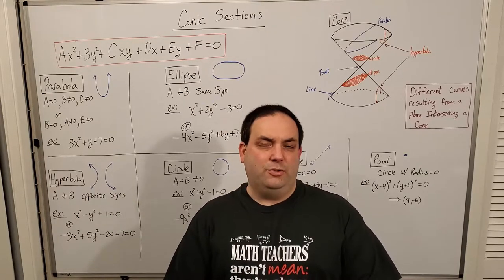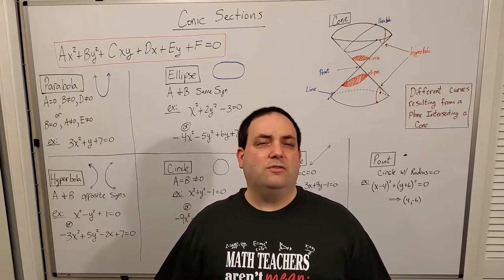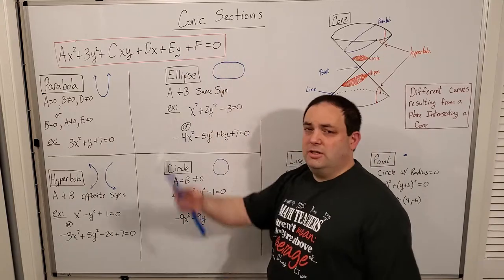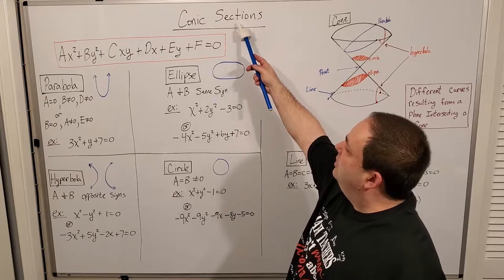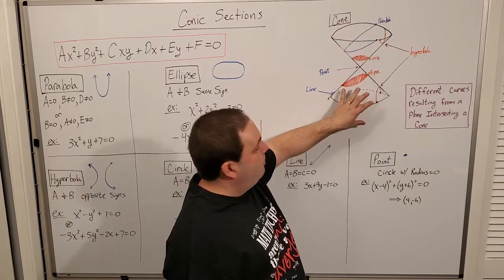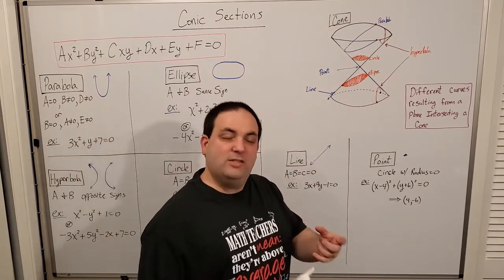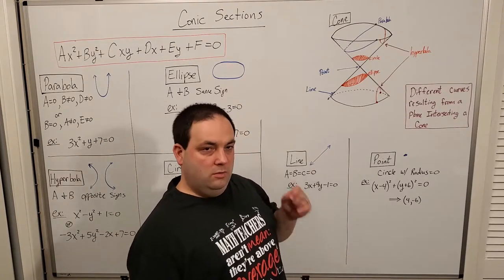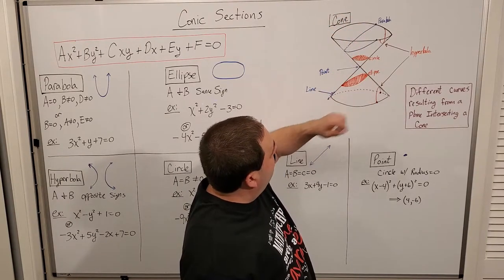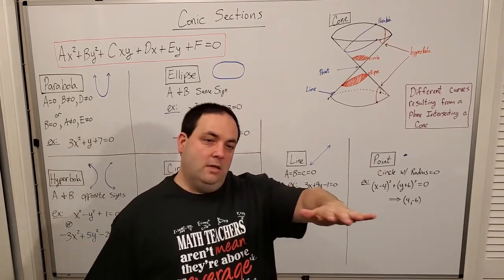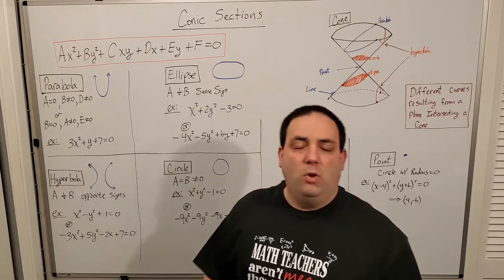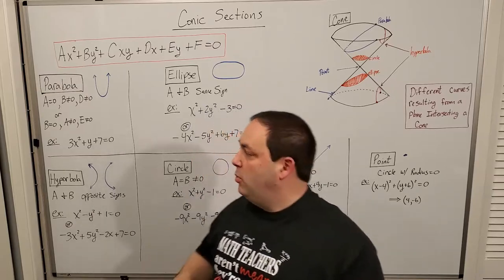The first thing we want to step into is what we call conic sections — very popular, very common curves that come from straightforward equations. A conic section is exactly what the name describes: it's a section of a cone. A cone is both the top and the bottom of this shape — what we call a cylindrical cone. A section is when I take a plane and slice into this cone. There are all manner of curves that occur whenever I take this cone and slice a plane into it.